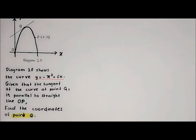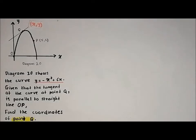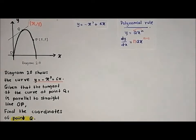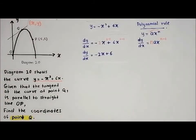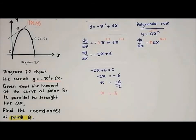For the next question, the diagram shows the curve y equals negative x squared plus 6x. Given that the tangent to the curve at point Q is parallel to straight line OP, we need to find the coordinates of point Q, meaning we find x and y at Q. First, we differentiate the equation y equals negative x squared plus 6x using the polynomial rule, and we get dy over dx equal to negative 2x plus 6. To find the x-coordinate, we set the equation equal to 0 and solve to get x equals 3.